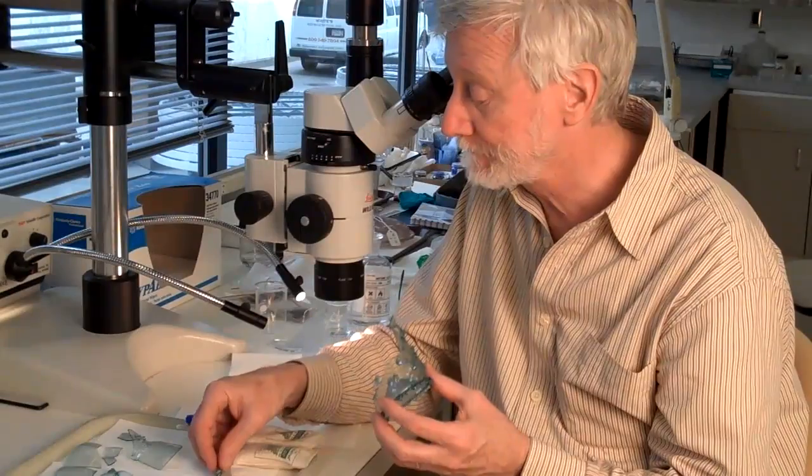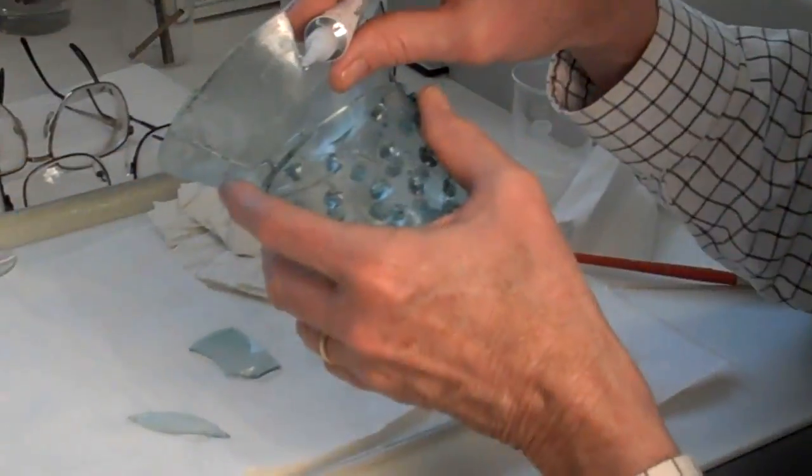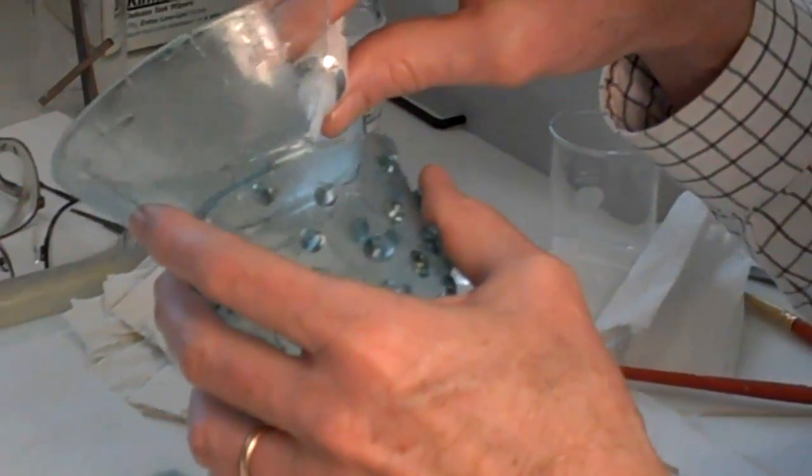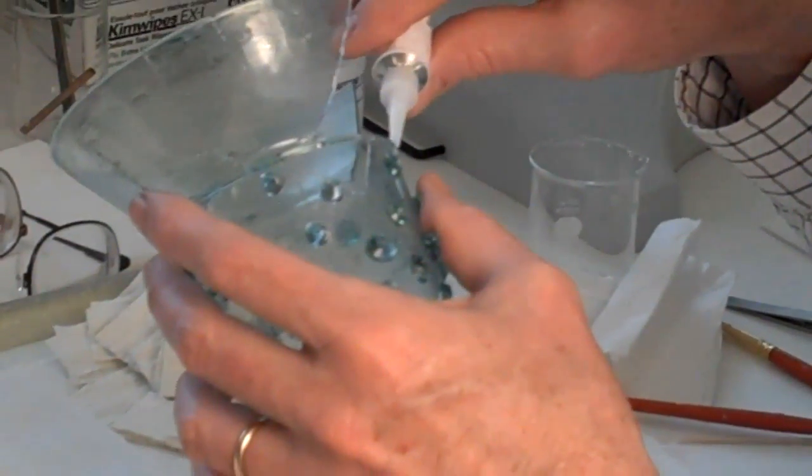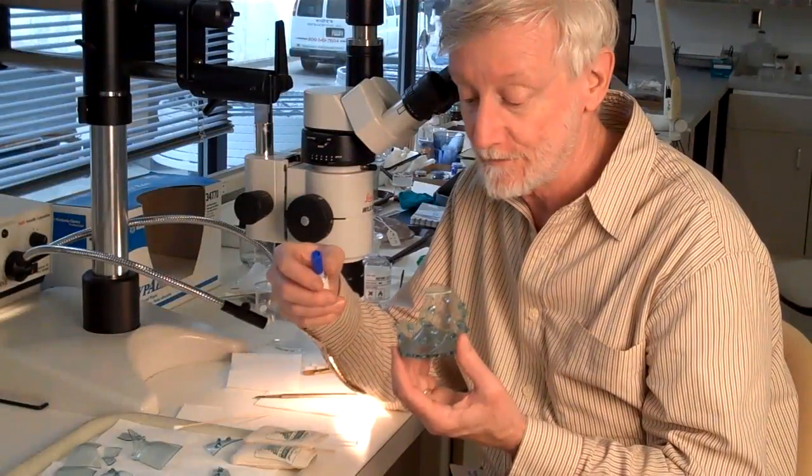We're using an acrylic adhesive. The advantage of acrylic adhesive over something like an epoxy is it's very easy to apply. It's very easy to remove and even move the fragments as we're assembling.